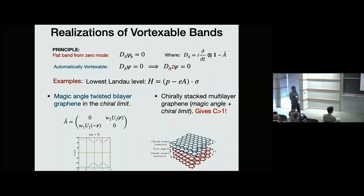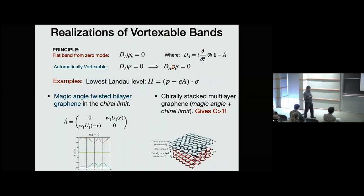Another quite interesting example is to take chirally stacked multilayers. Instead of just bilayer, you can have a stack of graphene layers that are chiral in the sense that when you go from one to the other, there's a particular stacking arrangement. You can take N of one stack, twist it against M of the other, and go to the chiral limit throwing away all same-sublattice hoppings. It turns out they have the same magic angle, and you end up getting Chern bands which are flat and also vortexable because they're zero modes. They end up carrying Chern number greater than one — in fact, you can get any Chern number you want by taking different numbers of these stacks. So you get a band with Chern number different from one that is vortexable, and we can go there and see what kind of interaction physics you get.